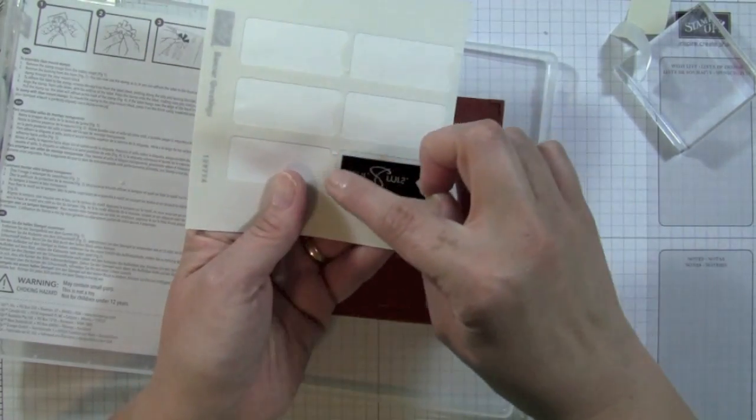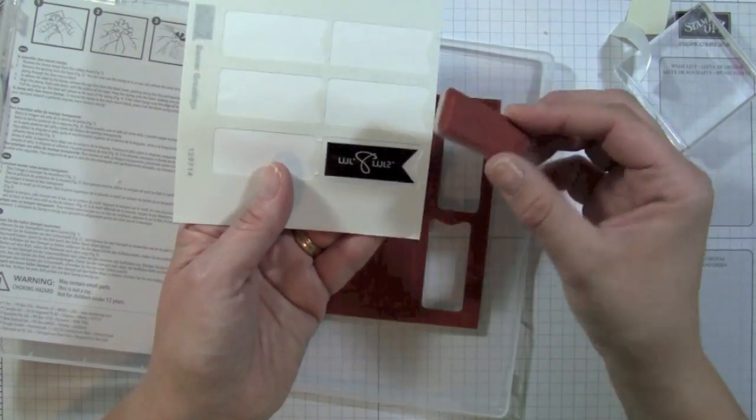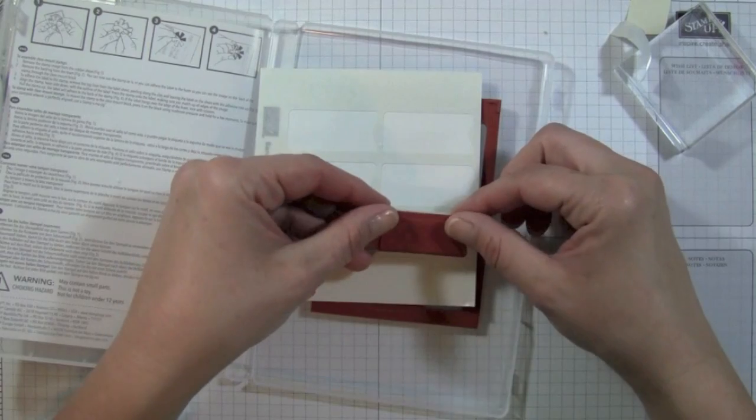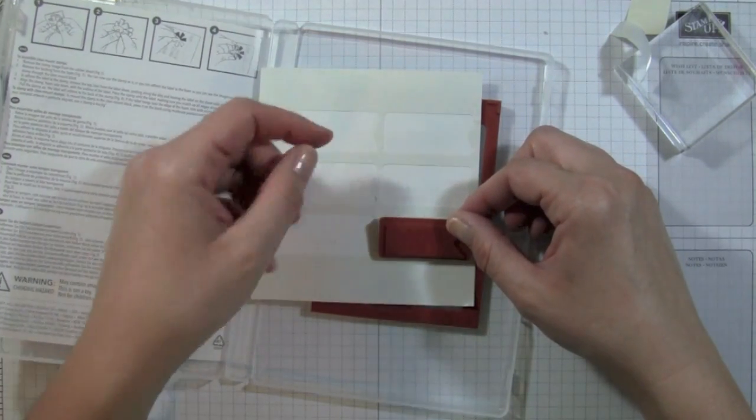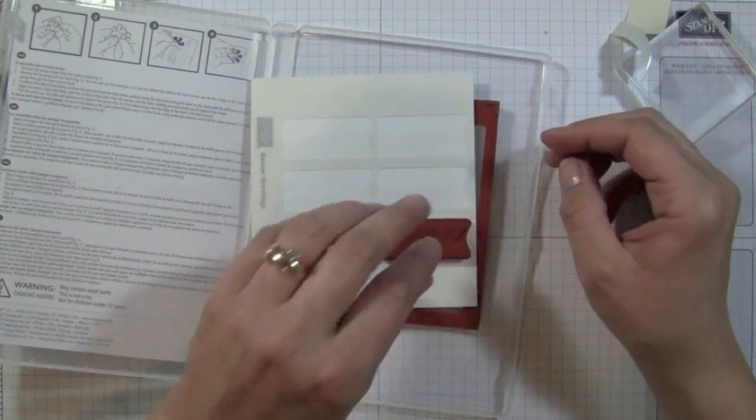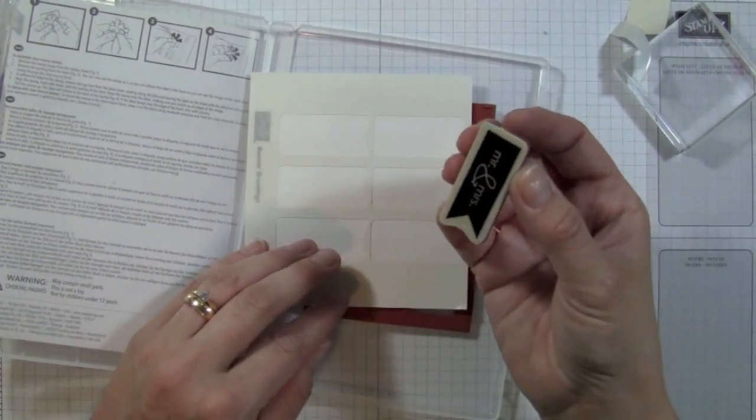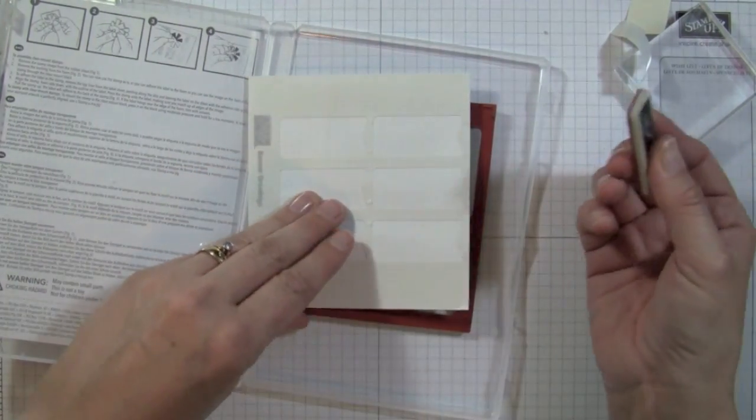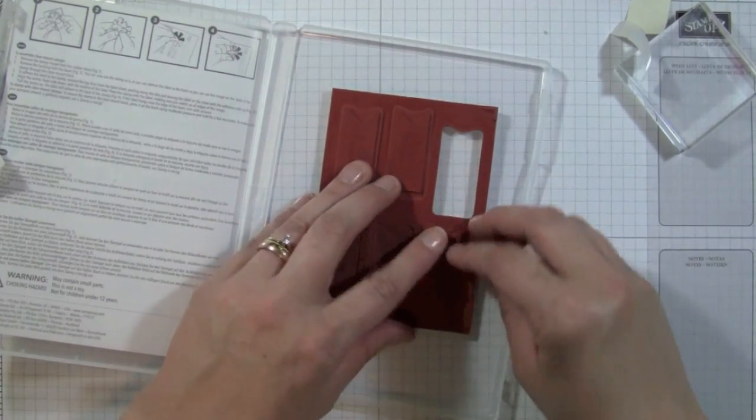This outline where the sticker is is the same shape as the stamp itself. So you take your stamp and you line it up onto that piece, so there's like a little outline from where you pulled the sticker off. Push it down, and when you peel it up your sticker will be lined up onto your stamp. So, like I said, I like to keep mine without the sticker.